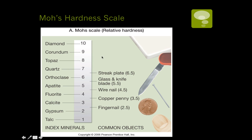To determine hardness, we use common basic items as a reference guide. If it scratches your fingernail, the hardness is greater than 2.5. If it scratches a penny, it's harder than 3.5, and so on up the scale. To get harder than a steel plate, you start scratching other minerals — if it scratches quartz, it's greater than 7; if it scratches corundum, it's harder than 9.